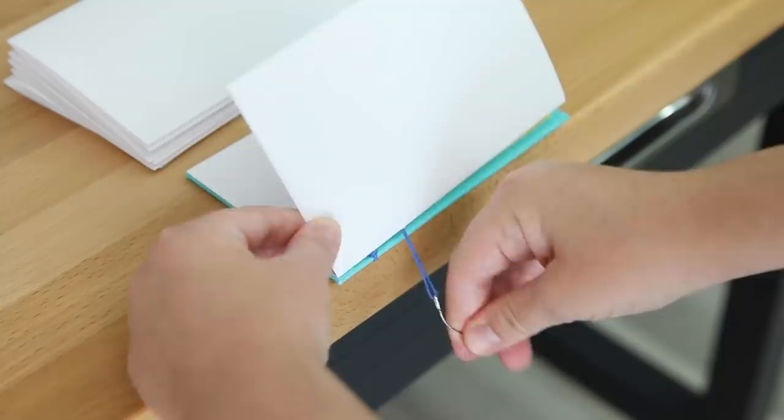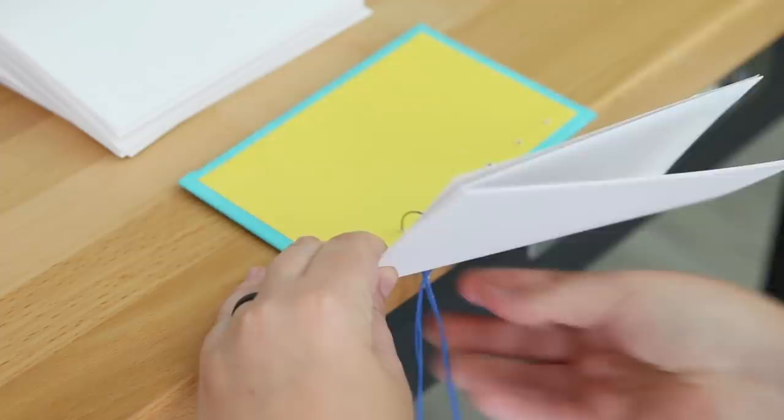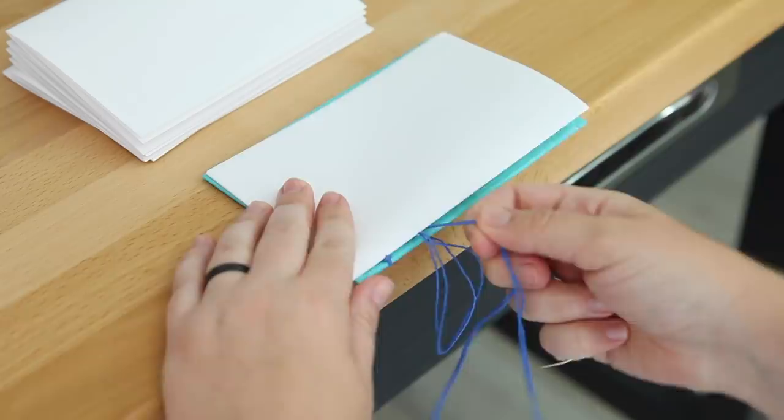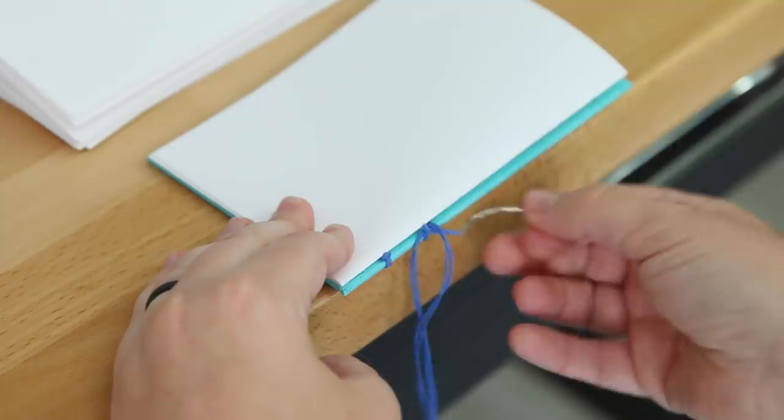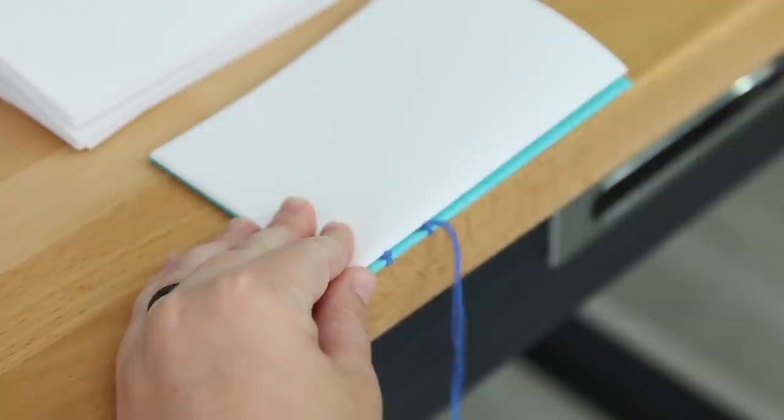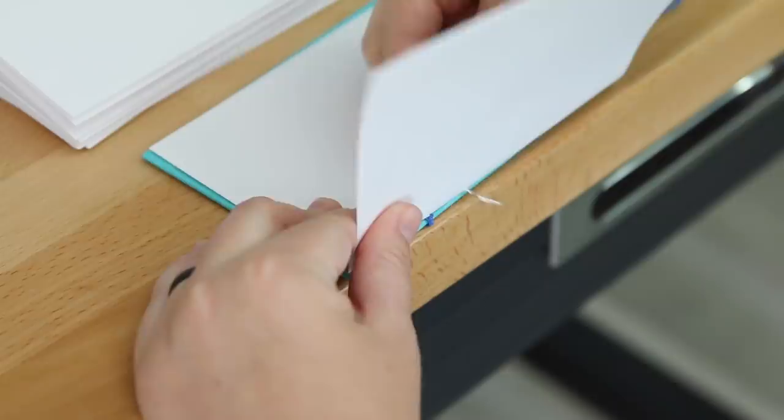Now go through the next binding hole to the outside. Loop around the cover just like you did with the last one, and loop the thread behind that. If your thread tangles, just be patient and go slow and untangle it if you need to. Return to the inside of the signature, and you're going to repeat that same step for all of the binding holes on this signature.